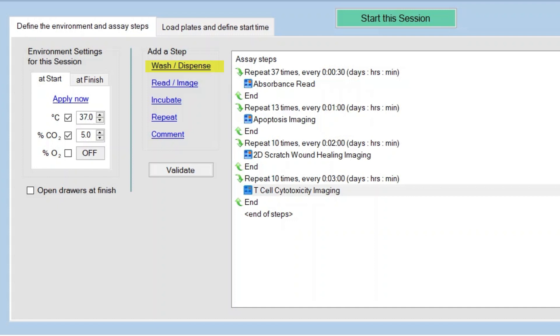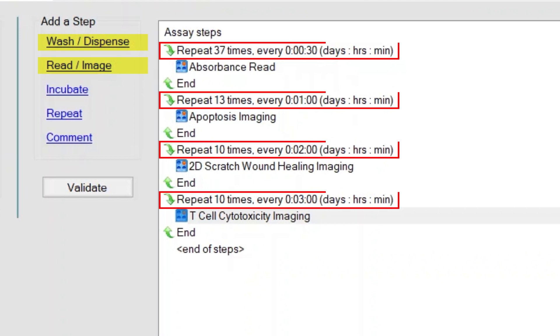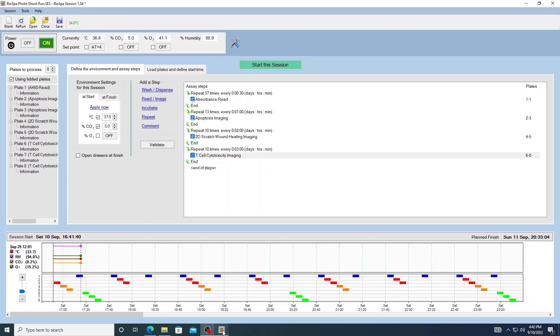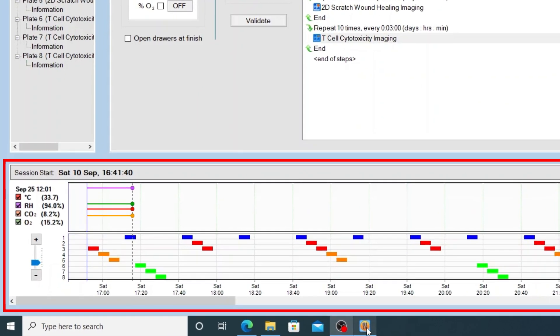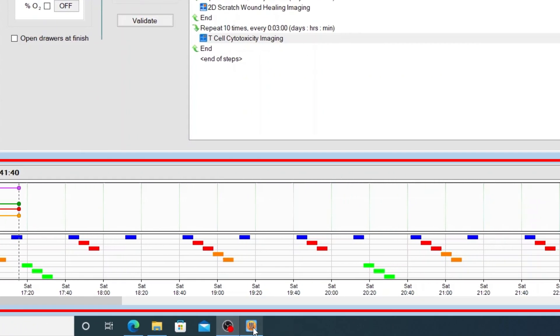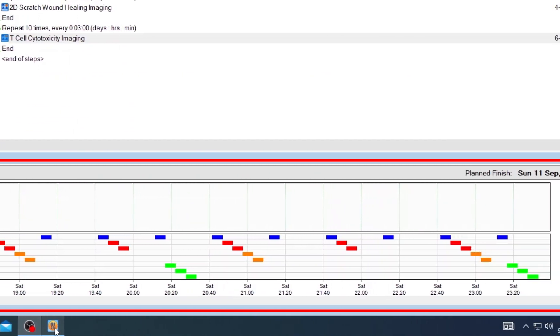These can be liquid handling, reading or imaging protocols with varying intervals for when the steps should be performed. The scheduling algorithm within the software automatically computes how the different protocols fit together to maintain proper timing for each. This is displayed as a Gantt chart to the user where individual processing of each vessel and real-time monitoring of environmental conditions can be seen.